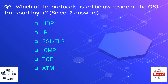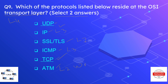Question number nine is: which of the protocols listed below reside at the OSI transport layer? We have to select two answers — remember transport layer is layer four. The options are UDP, IP, SSL, TLS, ICMP, TCP, and ATM. The correct answers are UDP and TCP. IP is a layer three protocol, SSL is a layer seven protocol, ICMP is a layer three protocol, and ATM is a layer two WAN protocol.